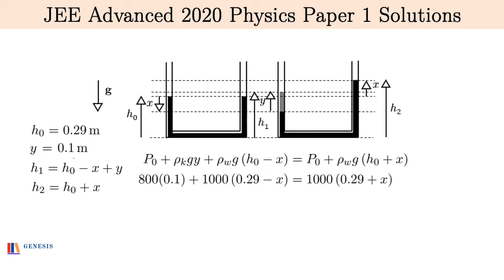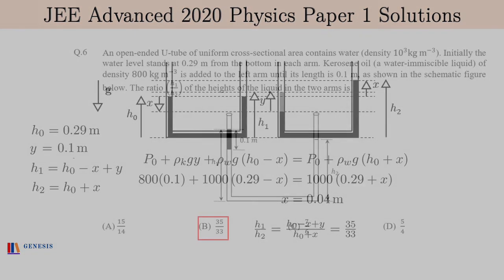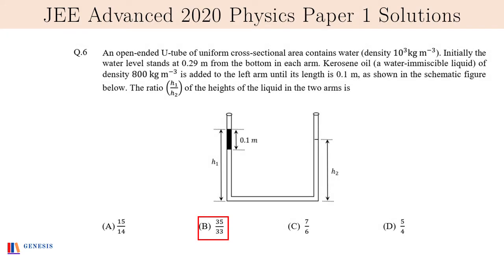Cancelling out the P0 and then g on both sides as a common factor, and then substituting the values, we get a linear equation in x which is easily solvable, and this gives us x equals 0.04 meters. And now the answer is very simple: h1 by h2 is basically h0 minus x plus y divided by h0 plus x. Substitute the values, you will get 35 by 33, and this makes B as the correct option.